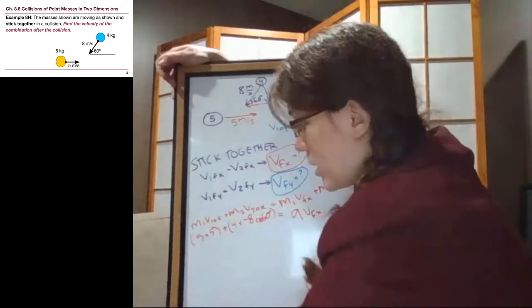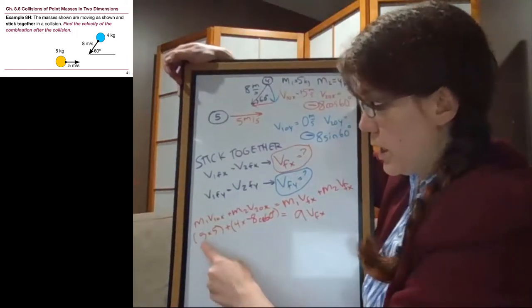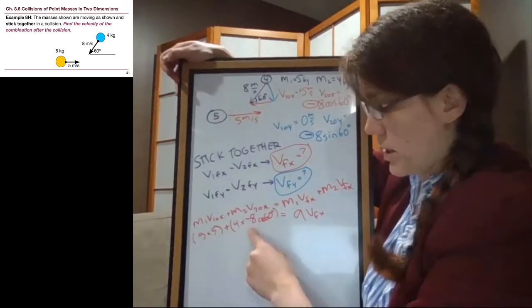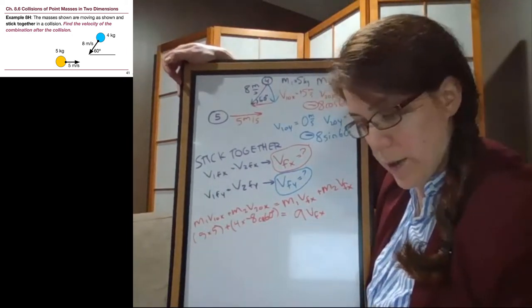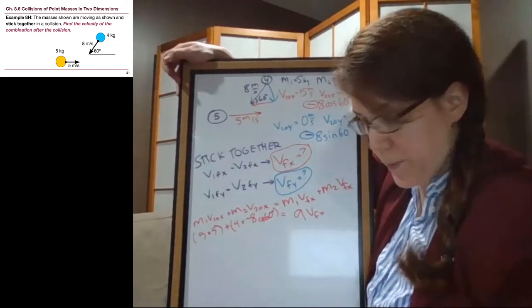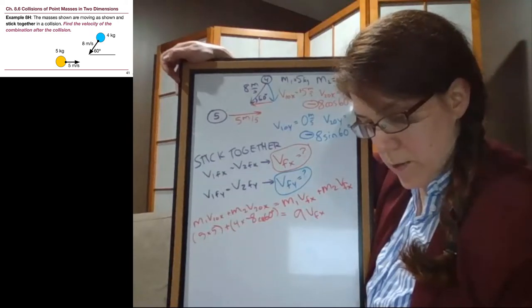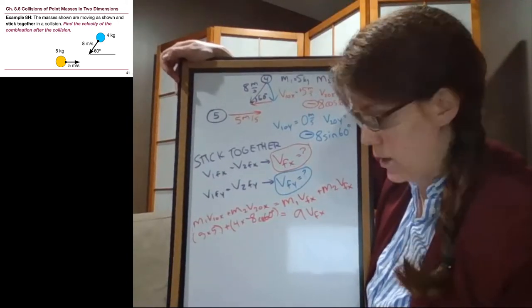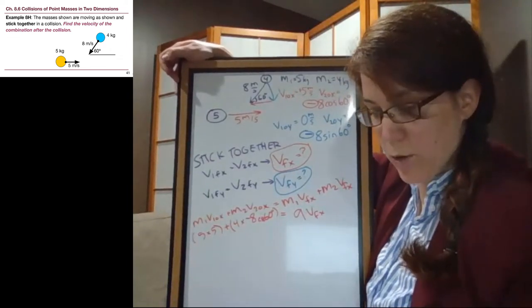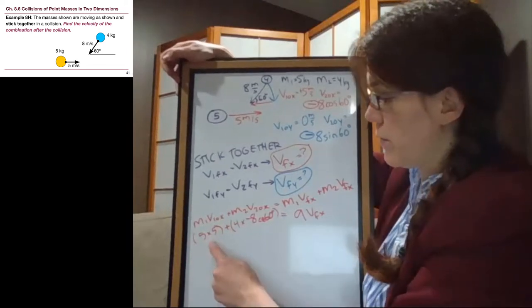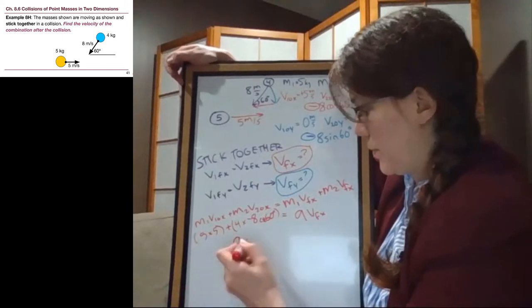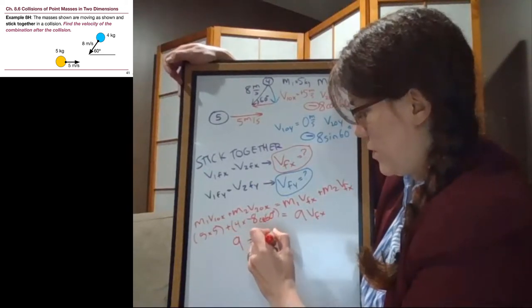Okay, this entire left side we can do, so it's going to be 25, and it's going to be minus, looks like 16 here, but we'll double check. So 5 times 5 plus negative 4 times 8 times cosine of 60 degrees. It's about midnight right now when I'm recording this, so I don't trust my mental math. Yeah, 25 minus 16 is 9 on the left side, positive 9 is equal to 9 v final x.